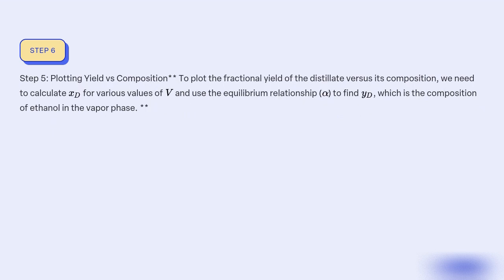Step 5: Plotting fractional yield vs composition. To plot the fractional yield of the distillate versus its composition, we need to calculate xD for various values of V and use the equilibrium relationship defined by alpha to find yD, which is the composition of ethanol in the vapor phase.